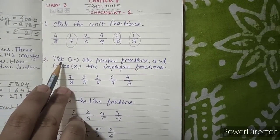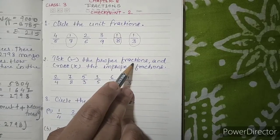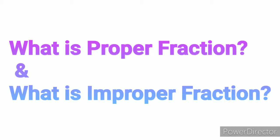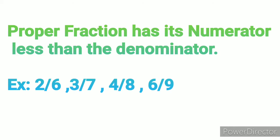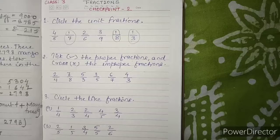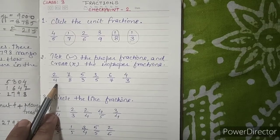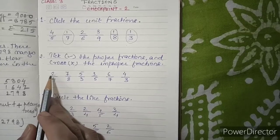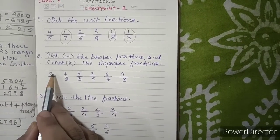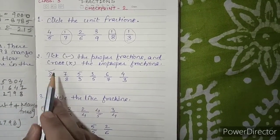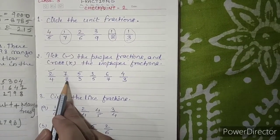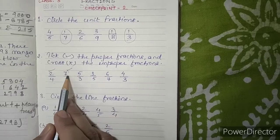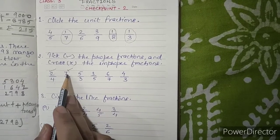Question number 2: Tick the proper fractions and cross the improper fractions. A proper fraction has its numerator less than the denominator. For example, 2 by 4 — 2 is the numerator and 4 is the denominator, so numerator is less than denominator, making it a proper fraction. Similarly, 7 by 8 is also a proper fraction because the denominator is more than the numerator.